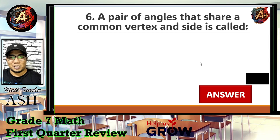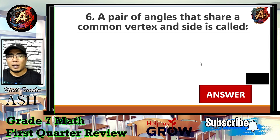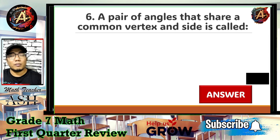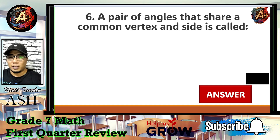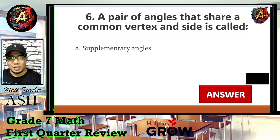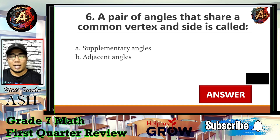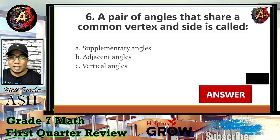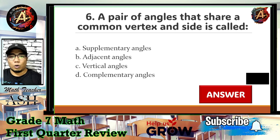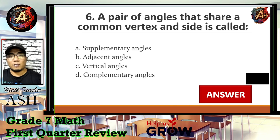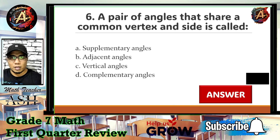Question number six: a pair of angles that share a common vertex and side is called — A) supplementary angles, B) adjacent angles, C) vertical angles, or D) complementary angles?